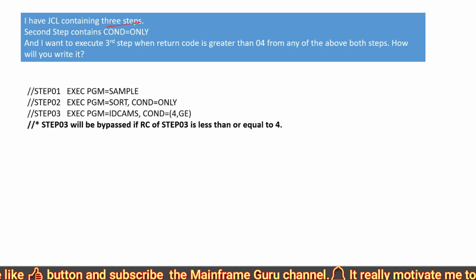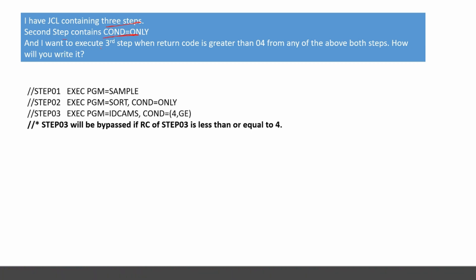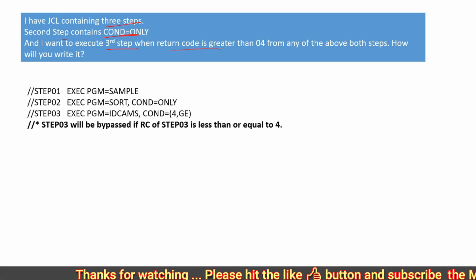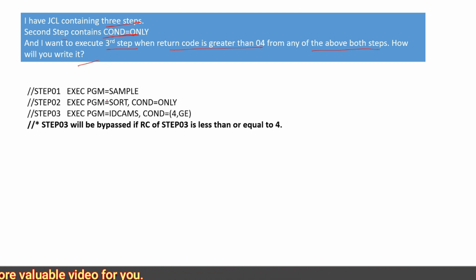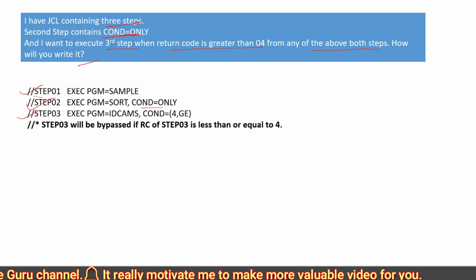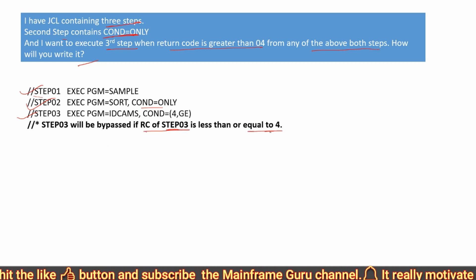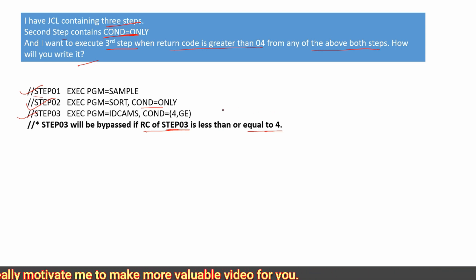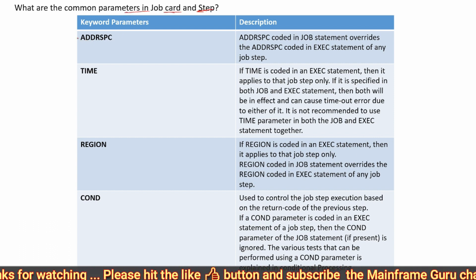The next question: I have a JCL containing three steps. The second step contains COND=(ONLY). I want to execute the third step when the return code is greater than 4 from any of the above steps. How will you write it? For step three, you write COND=(4,GE) — step three will be bypassed if the return code of any prior step is less than or equal to 4.